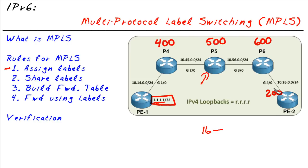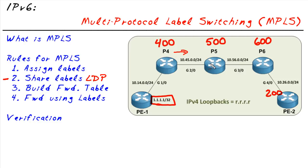The second rule is to share those labels using something called Label Distribution Protocol. When MPLS is enabled on the interfaces and in global config, LDP happens automatically. P4 advertises that he has label 400 associated with the 1111 network. We, as P5, hear this advertisement and store it as a remote binding — P4's local label for this network is 400. That same process happens all the way across the network in both directions, so eventually everybody knows their neighbors' labels for all of the routes in their routing table.